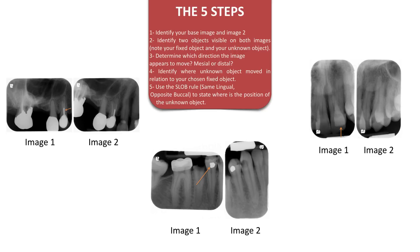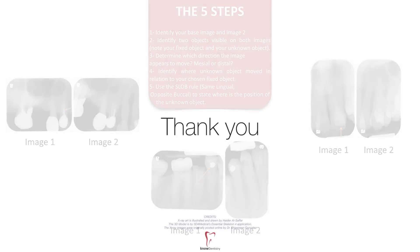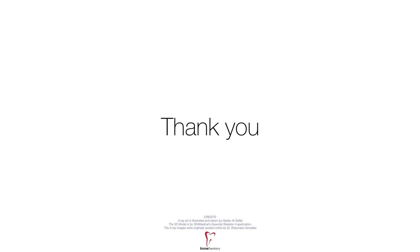In example three: where is the upper left two in relation to the upper left one? Can you find the answer using the five steps? Image one is our base image, the fixed object is the upper left one, and the unknown is the upper left two. There seems to be a distal shift from image one to two, and the upper left two seems to be moving with this shift; therefore it is palatally positioned to the upper left one. That brings us to the end of this tutorial — thank you for listening and I hope you benefited today.